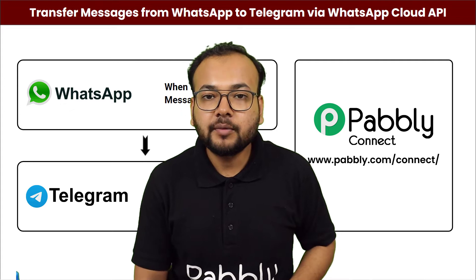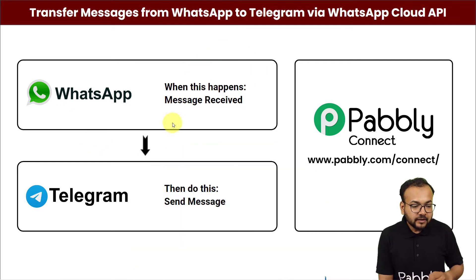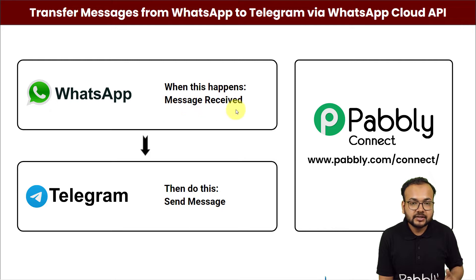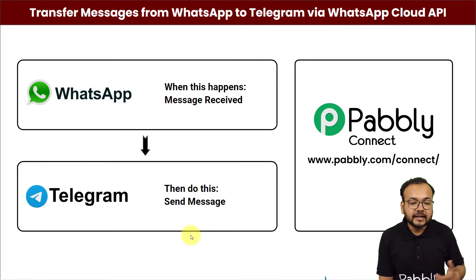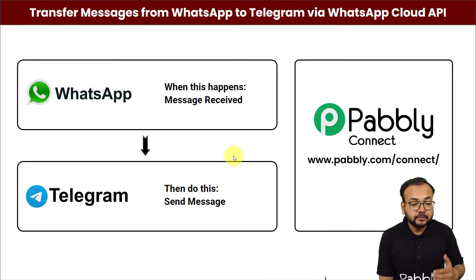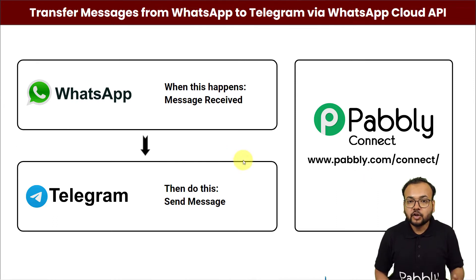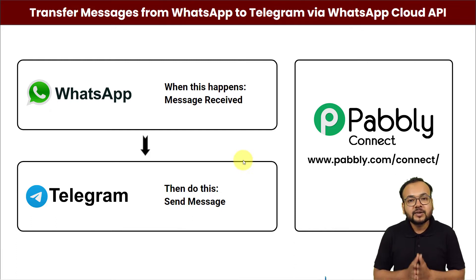You can see on my screen, this will be the flow of this automation: as and when you receive any message personally on WhatsApp, the same message will be delivered as a new message on a Telegram group automatically. To make this happen, we are using Pabbly Connect, which is an integration and automation tool. With the help of this, you can set up this automation very easily without any coding skills or programming knowledge.